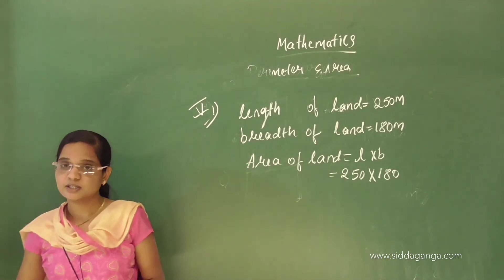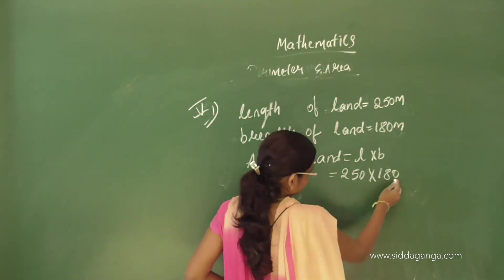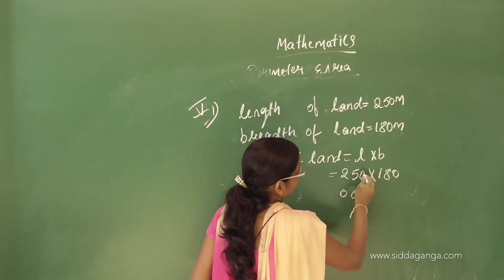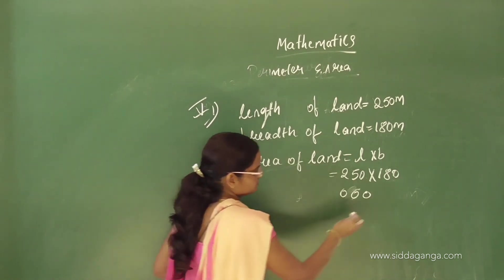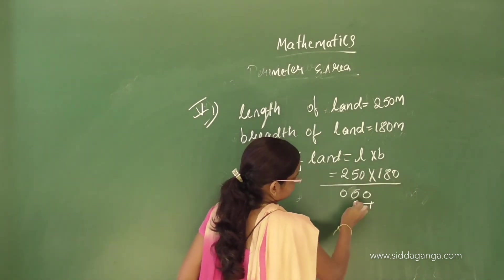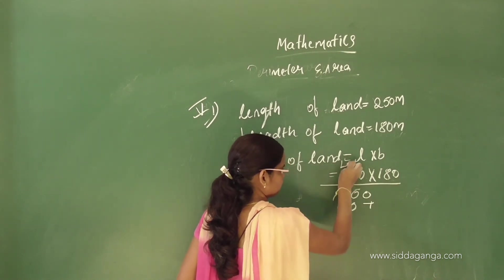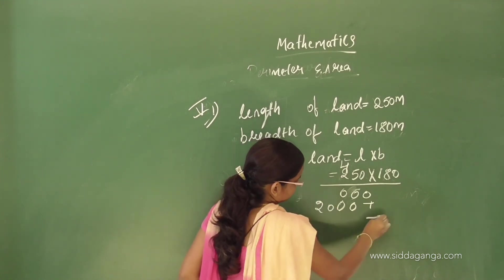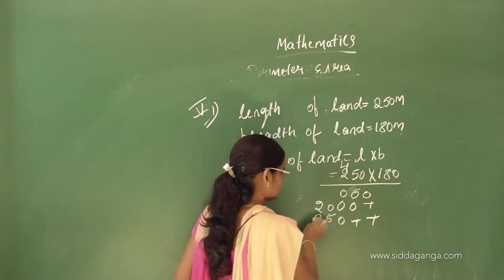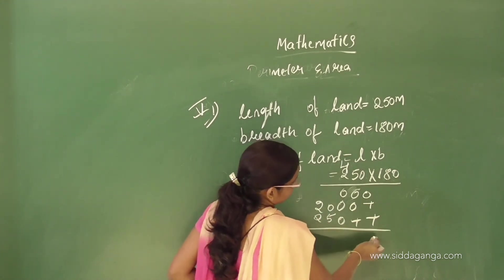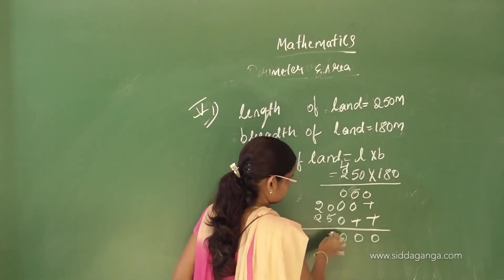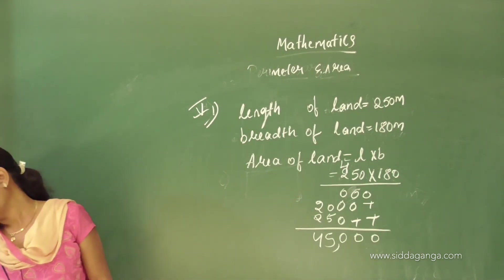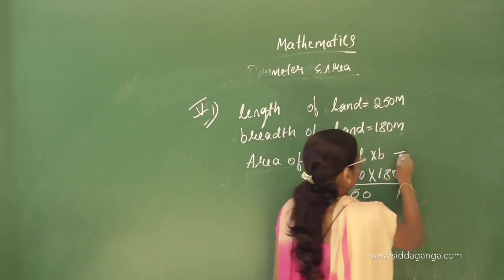Multiplying 250 into 180: working through the multiplication step by step gives the answer 45,000. So the answer is 45,000 metre square.